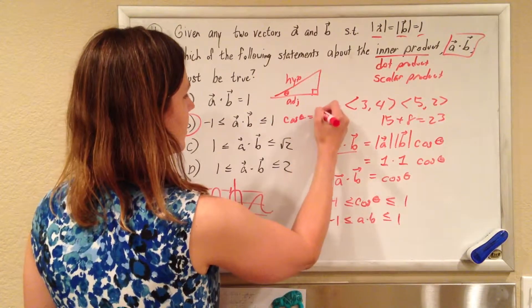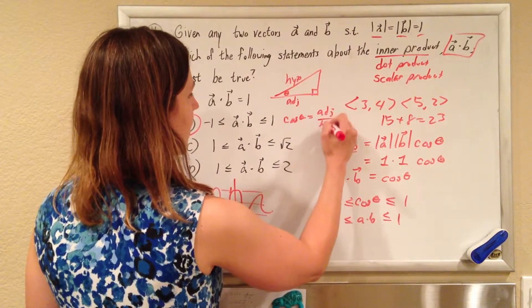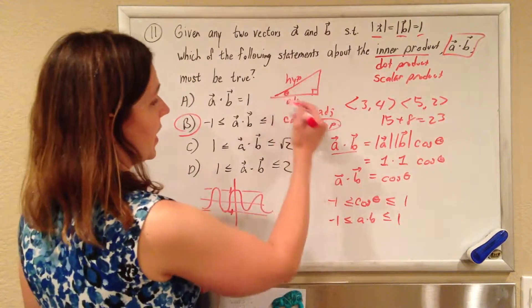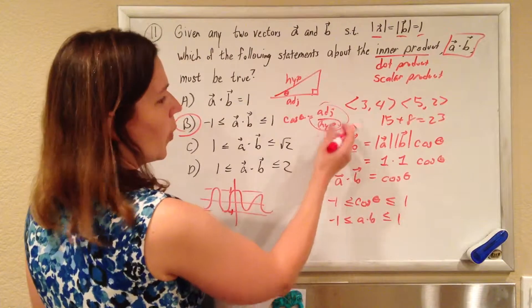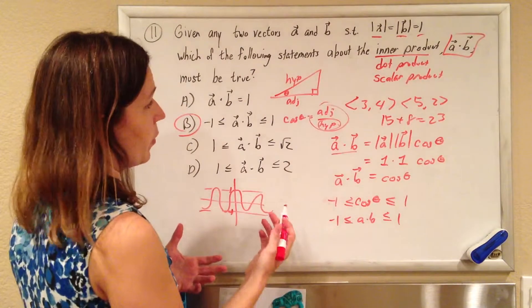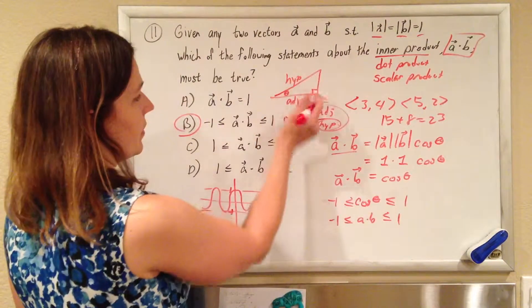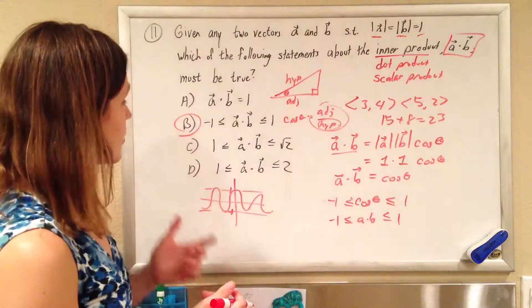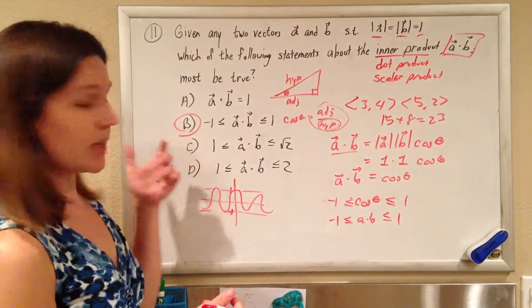Because the hypotenuse is always bigger, the biggest side, then this guy here always has to be a fraction smaller than one. And it only equals one if the adjacent length collapsed and was the same as the hypotenuse. So we can still get the same result.